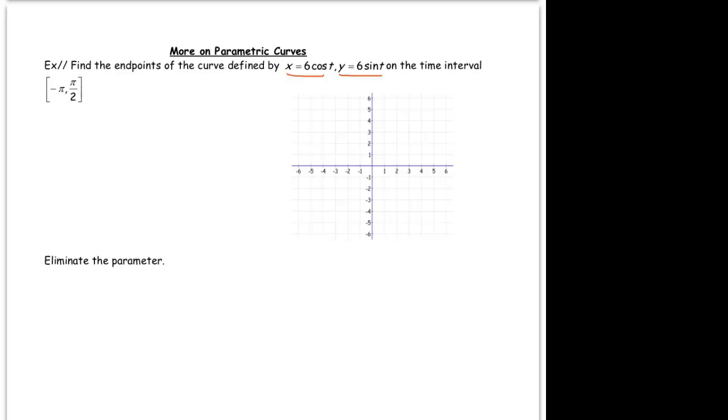So what I like to do is, if it's not already provided for me, I'll make myself a table. And in this table, it's going to have three columns because I'm going to need one for time, one for the x coordinate and one for the y coordinate. My time ranges from negative pi to pi over 2.